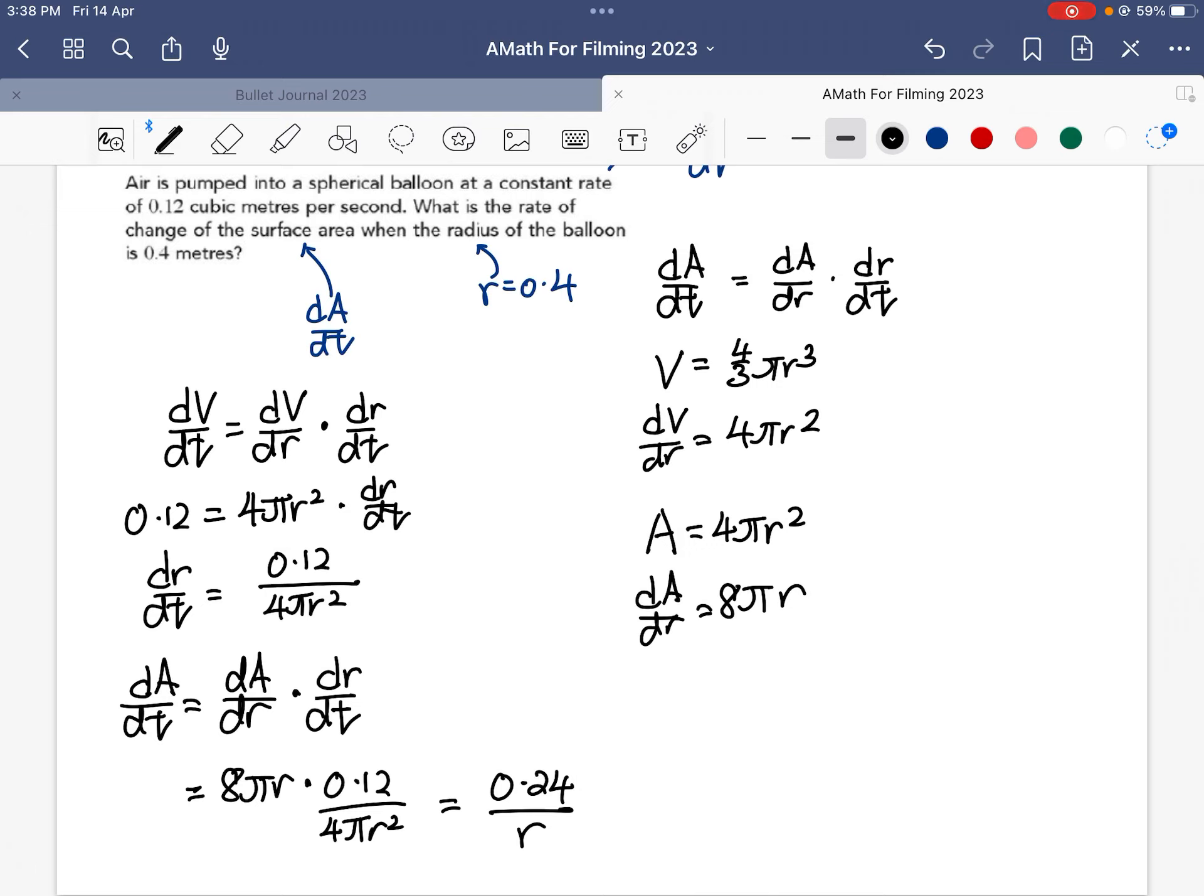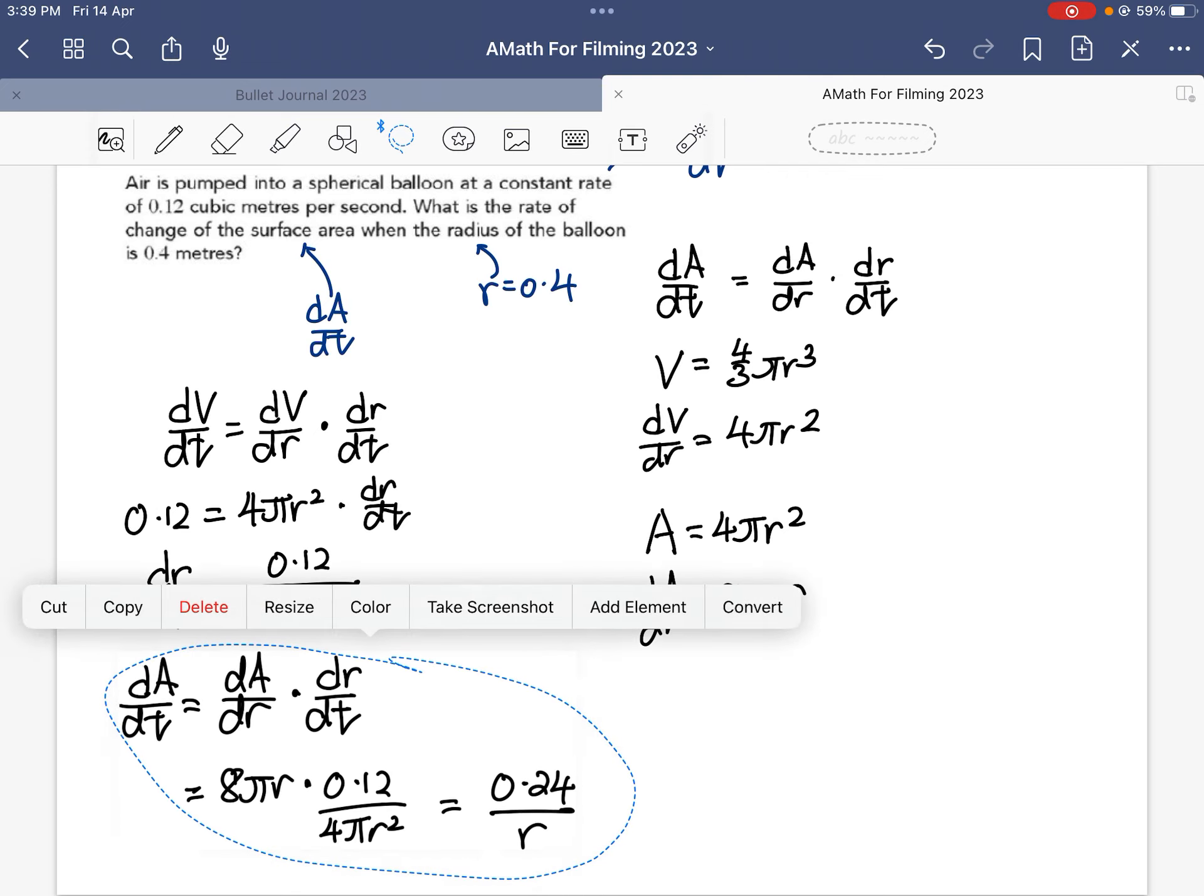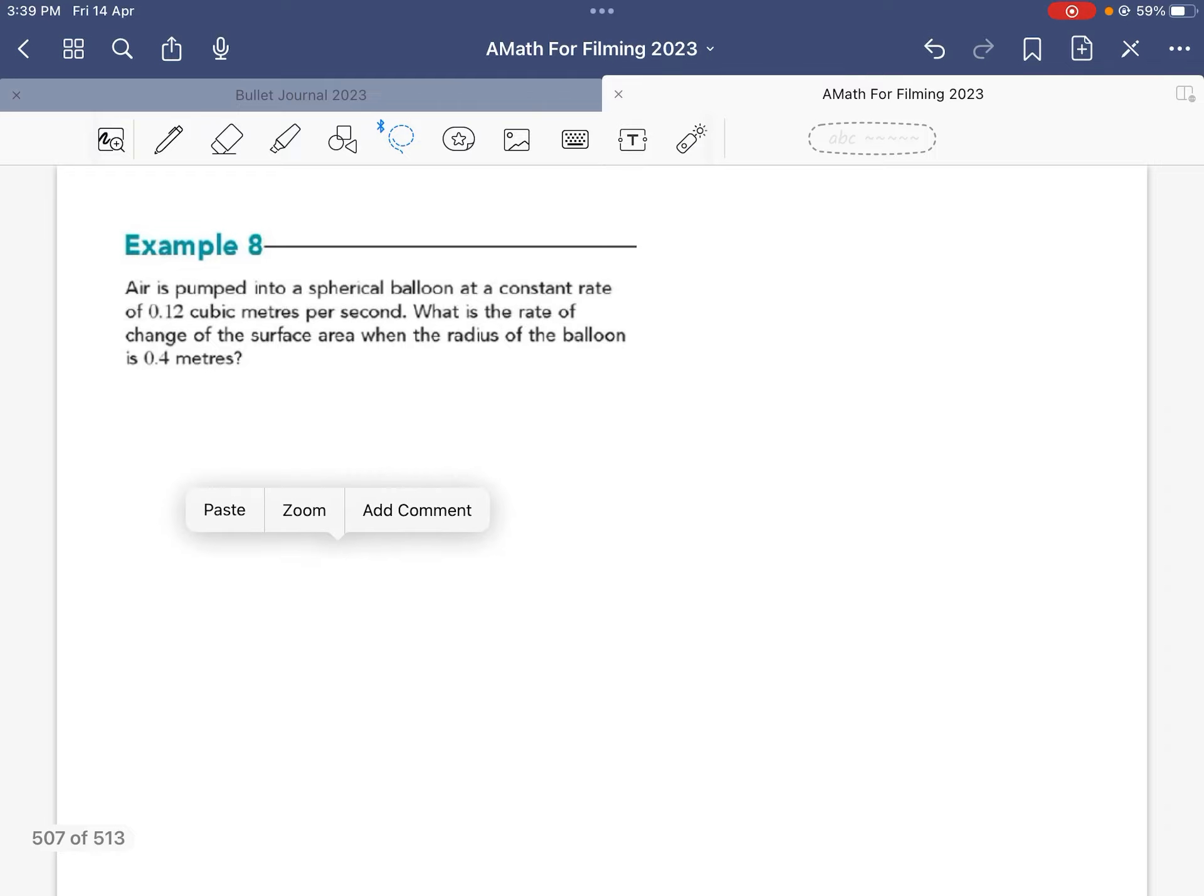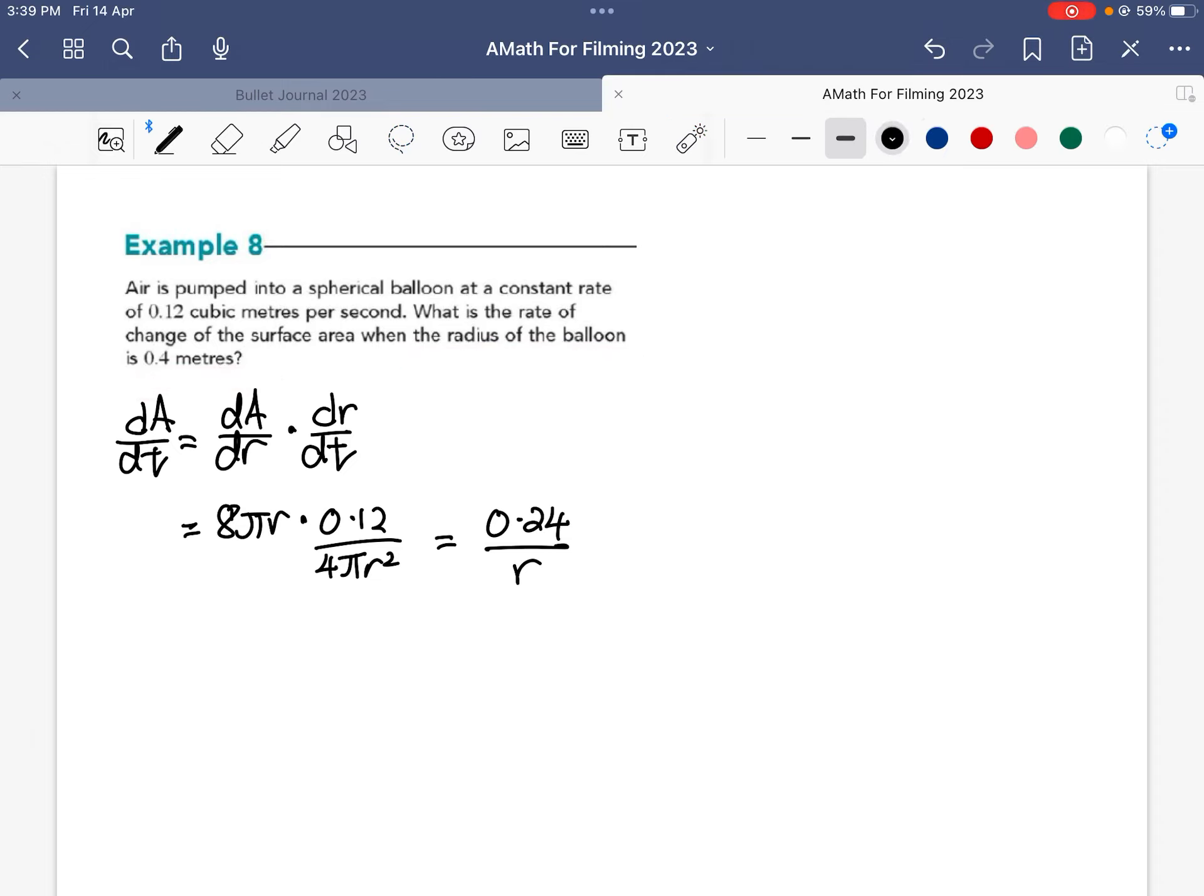Now I am almost done with my question. So 0.24 over r, let's just take note of that—that is the dA/dt. Why don't I just copy this whole thing over, down here.